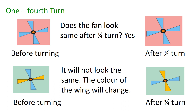One fourth turn. A picture of a fan having all four blades in blue color is shown. The second picture is after one fourth turn. Does the fan look the same after one fourth turn? Yes. Now, the second figure has two blades in blue color and two blades in orange color. When the fan takes a quarter turn, does it look the same? No. It does not look the same because the color of the wing changes.